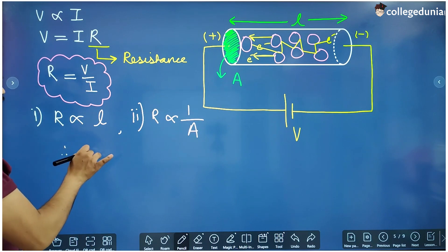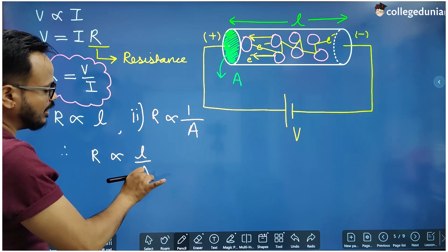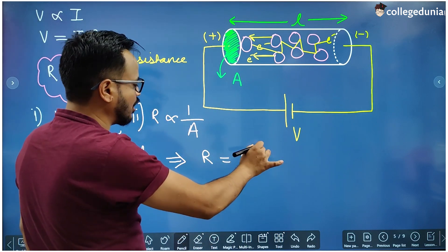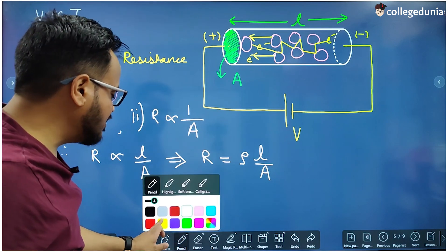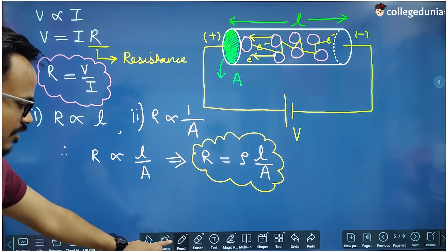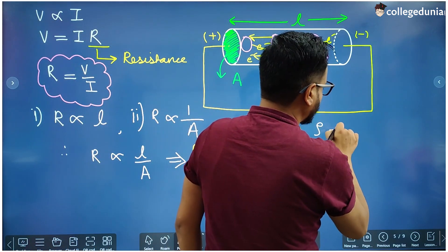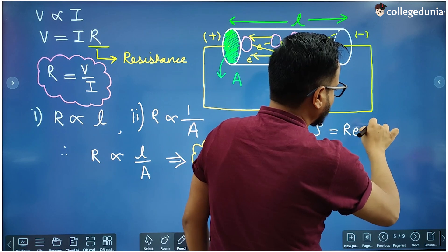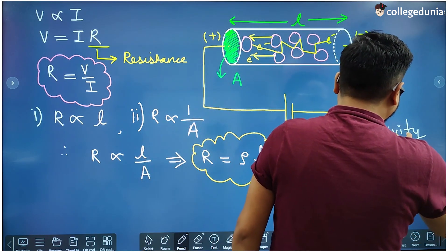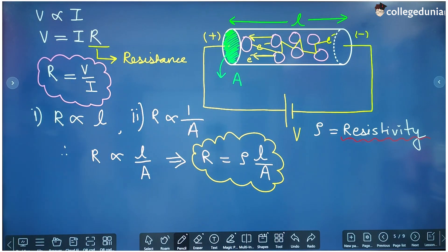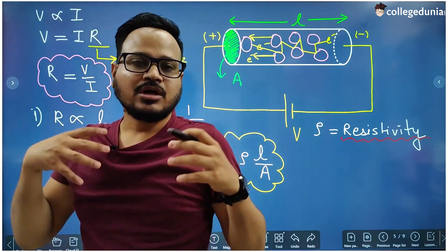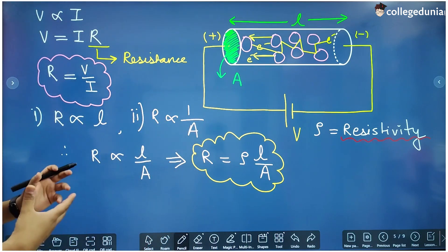Combining these two relationships, we get R proportional to L/A. When we remove the proportionality sign and introduce a constant, that constant is represented by rho (ρ), giving us R = ρL/A. This constant ρ is called the resistivity of the conductor. Resistivity represents the ability of the conductor to oppose the flow of electrons — higher resistivity means greater opposition to electron flow.